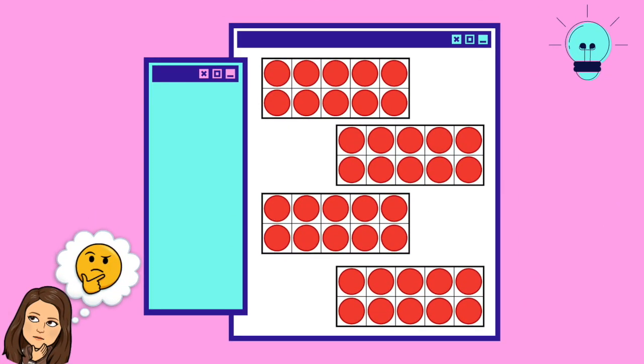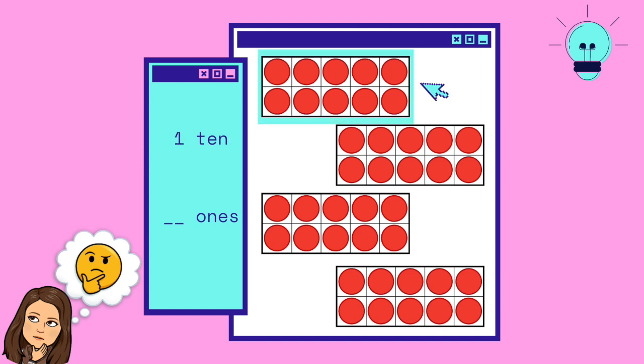Look at these counters. I could describe these counters by how many groups of 10 or by how many 1s. Watch as I count the groups of 10. There is one group of 10, two groups of 10, three groups of 10, four groups of 10.